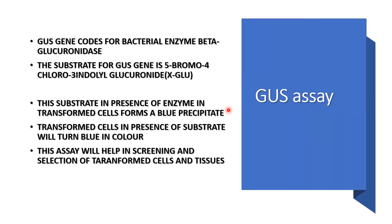Another screenable marker is the GUS assay. The GUS gene encodes the bacterial enzyme beta-glucuronidase, and the substrate for this gene is 5-bromo-4-chloro-3-indolyl-glucuronide. When this enzyme acts on the substrate, an indigo blue color appears, and that indigo blue color indicates the presence of transformed cells. So we can select the transformed cells which have turned blue in color, and these cells can be further used in genetic engineering experiments.